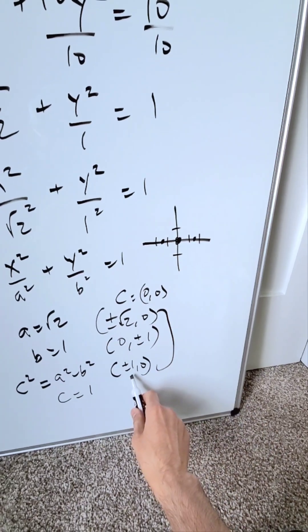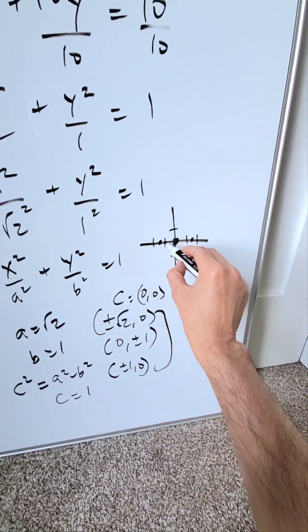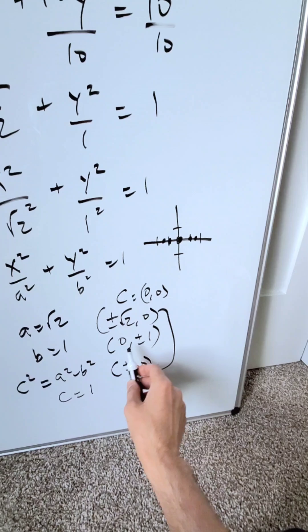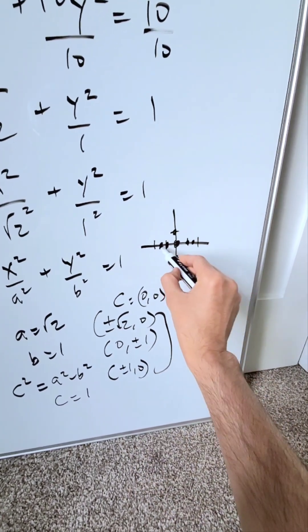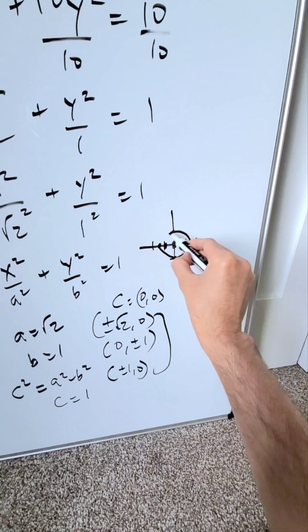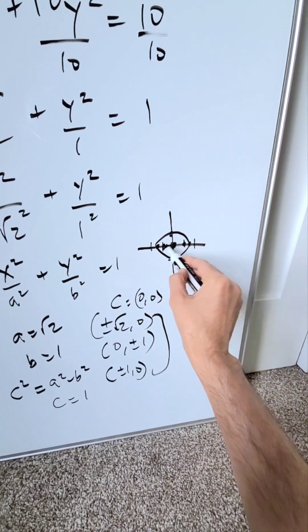Look over here at your focal point. Plus and minus 1 comma 0. That'll be right over here and 1 here. I have my minor axis endpoints 0 comma plus and minus 1. Your ellipse will look something like this. The unconnected dots in between will be your focal points.